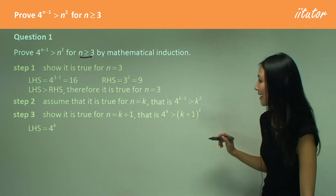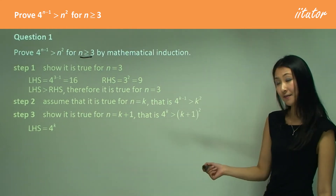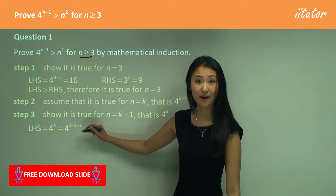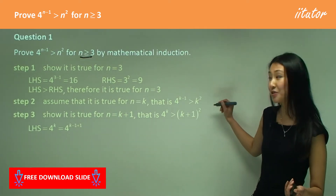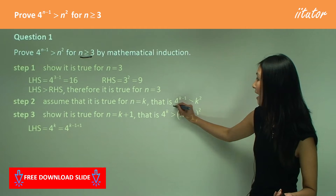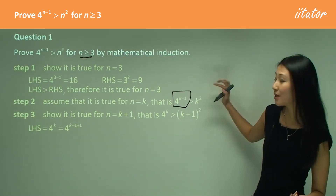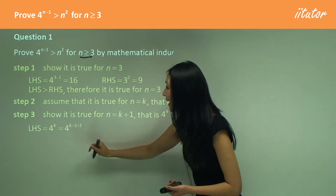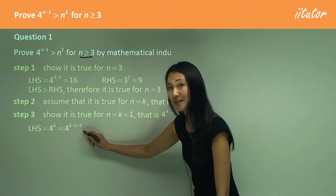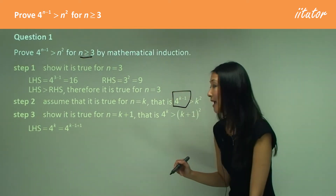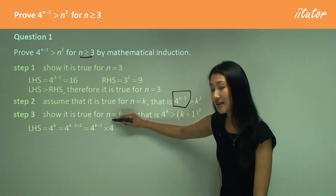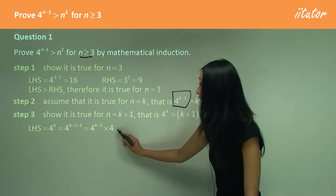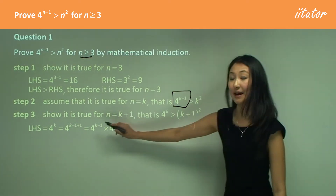So we start off with the left hand side equals to 4 to the power of k, and we can change that into k minus 1 plus 1. The reason we want to do that is we think back to our assumption, and we have 4 to the power of k minus 1. So we know we have to work that somehow into this. That's why we make this k minus 1, and we balance it with that plus 1. So this is the same as writing 4 to the power of k minus 1 times 4, because 4 to the power of 1 just becomes that times 4 there.